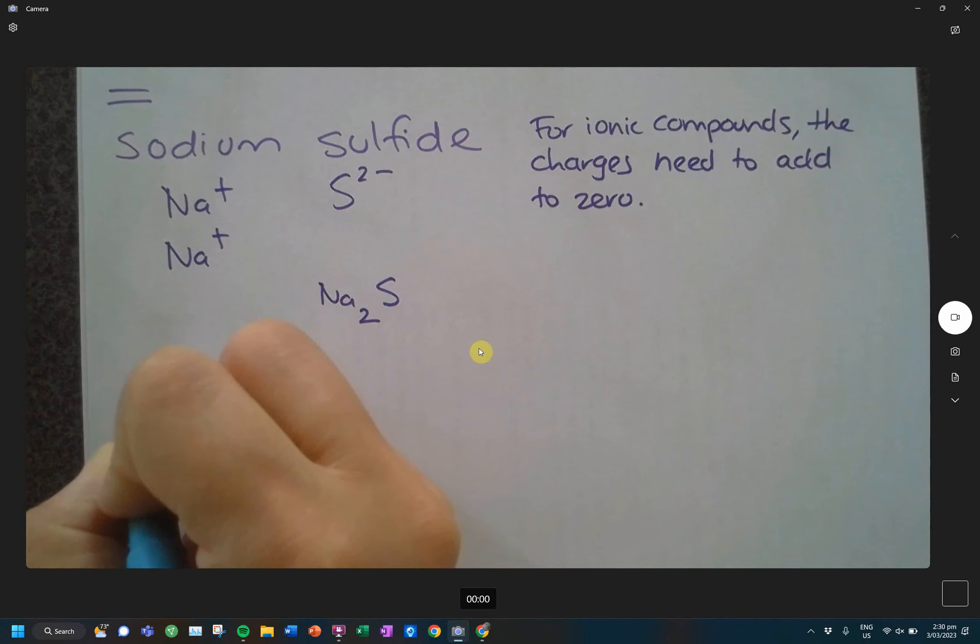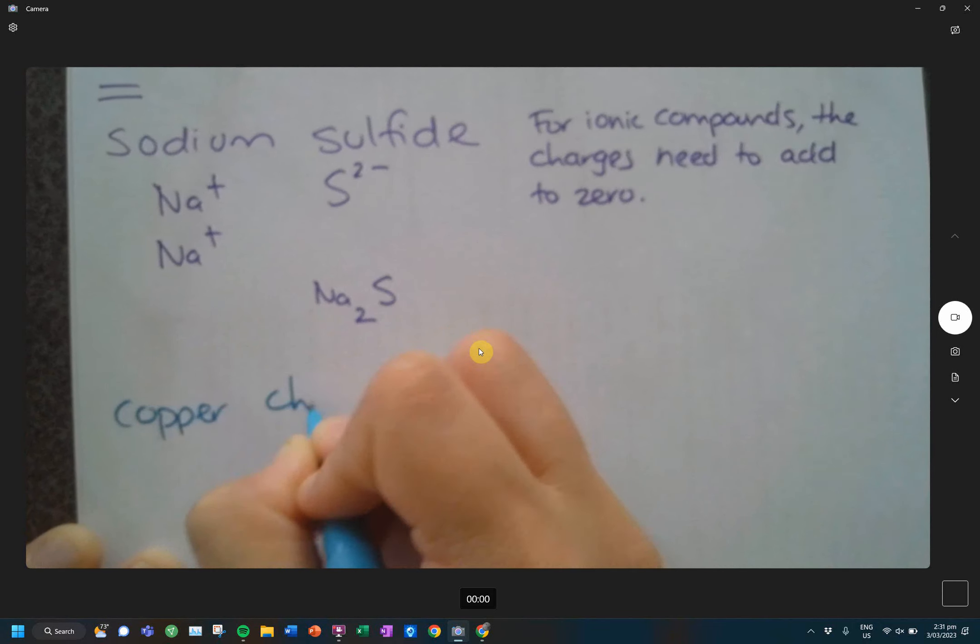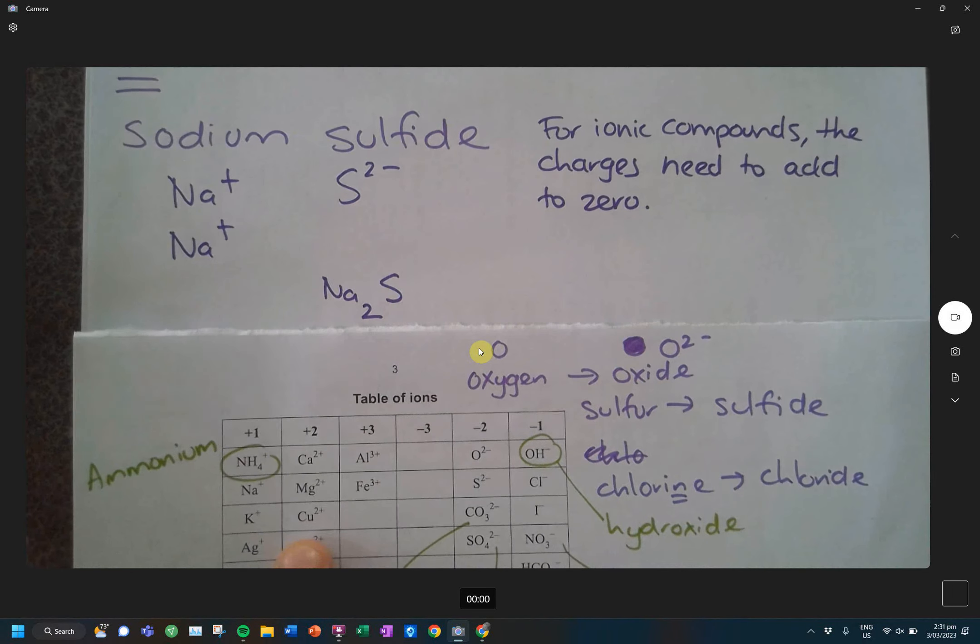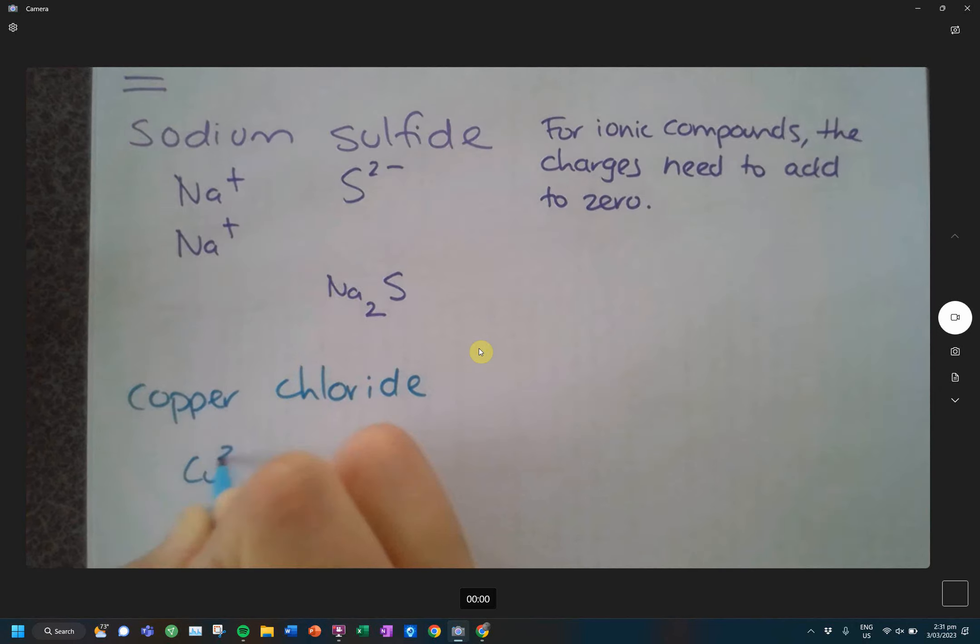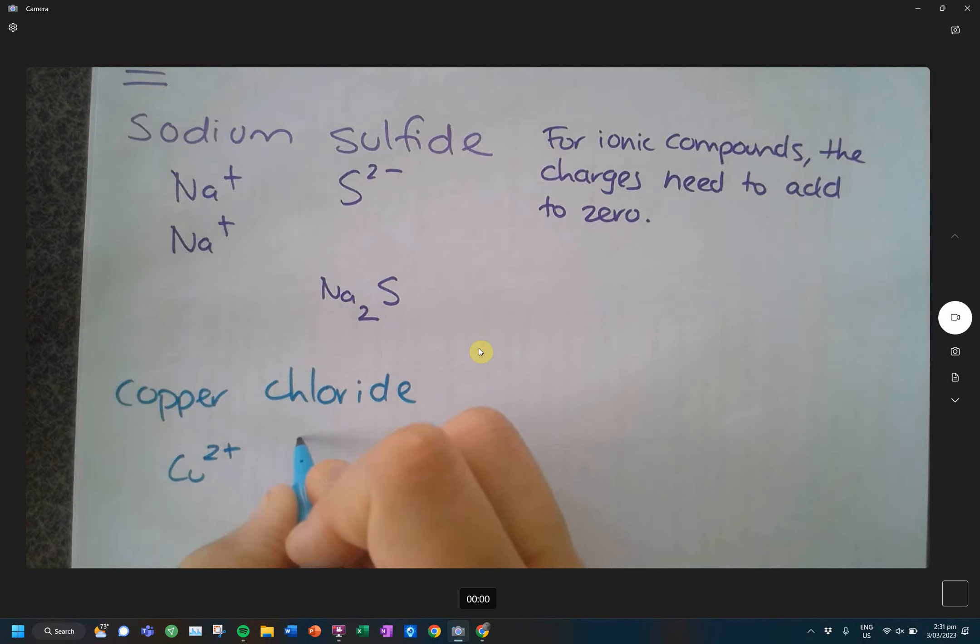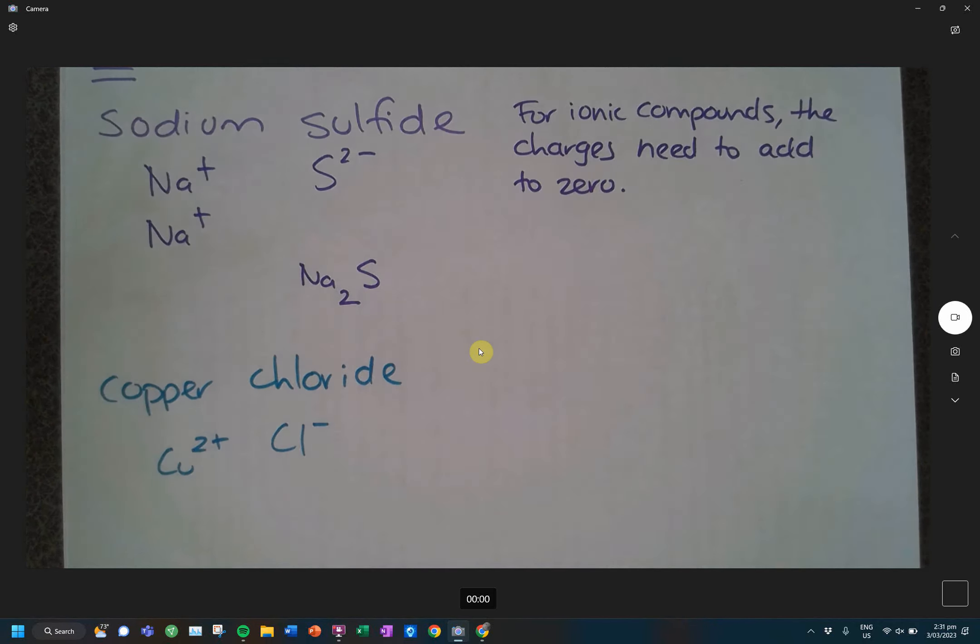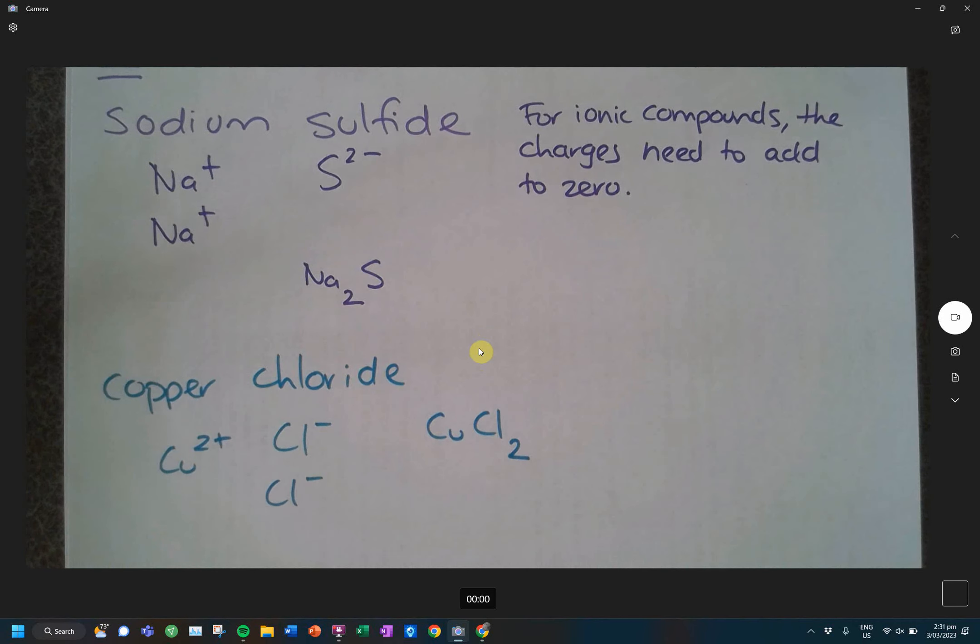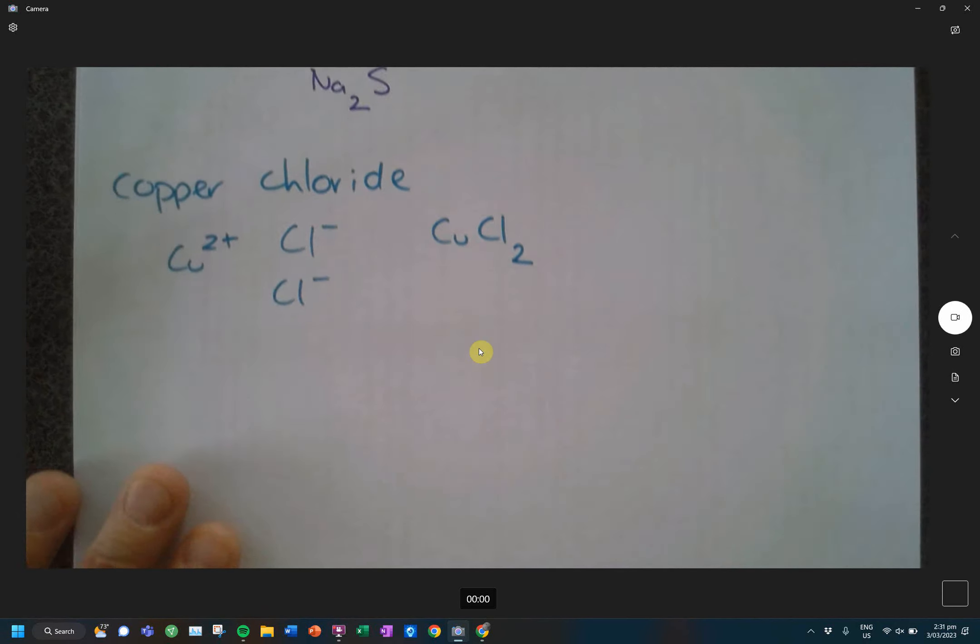The next example is copper chloride. So, if I look at my table of ions, I see copper's over here with that two plus, and then I see chloride with the negative one. So, is this currently going to balance to zero? No. So, I need to add what? One more chloride. So, now it adds up to zero, so I would have CuCl2.